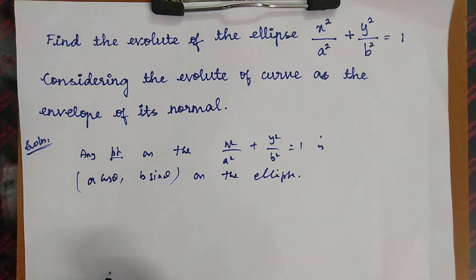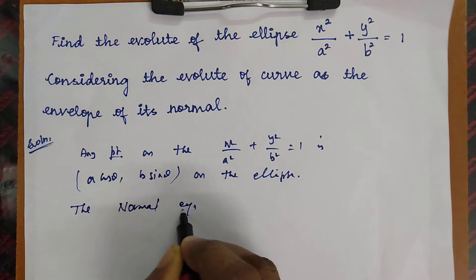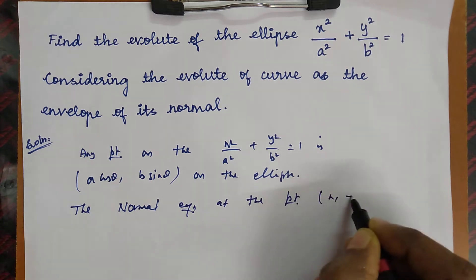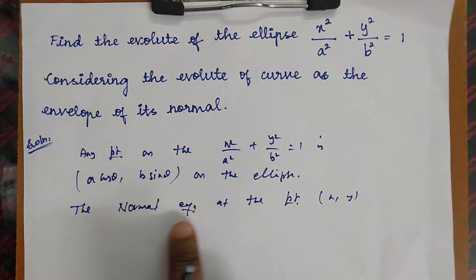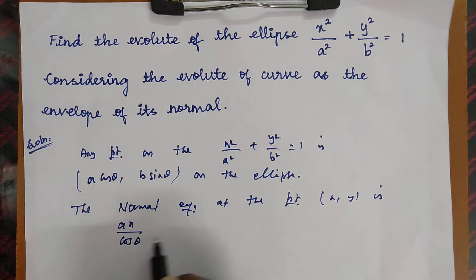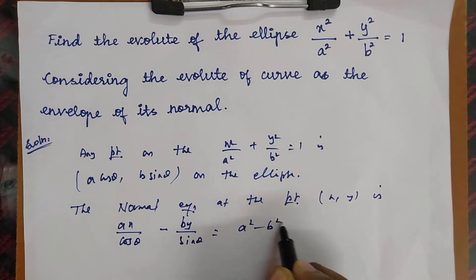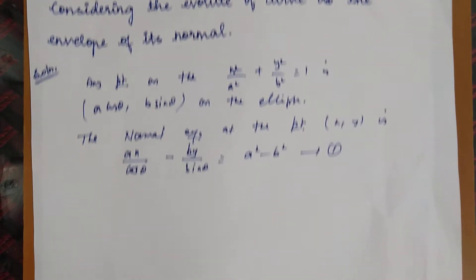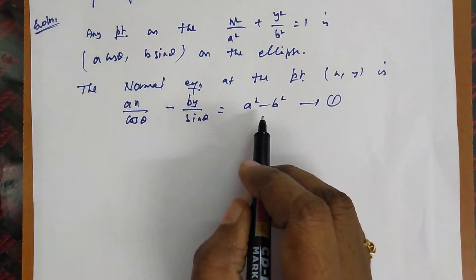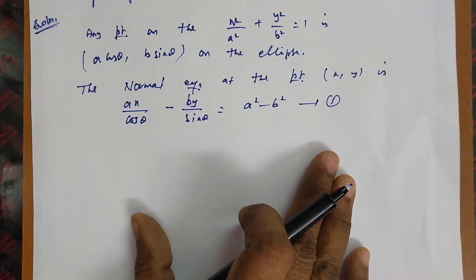The normal equation at the point (a cosθ, b sinθ) is: ax / cosθ − by / sinθ = a² − b². We call this equation 1. For this normal equation we have to find out the envelope.